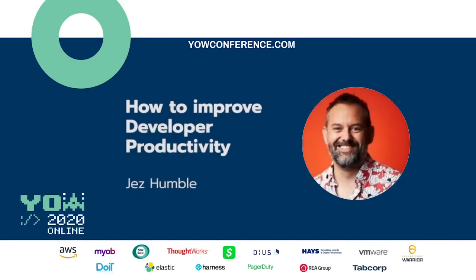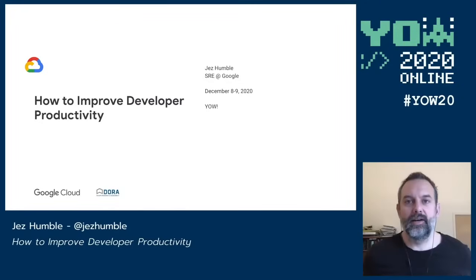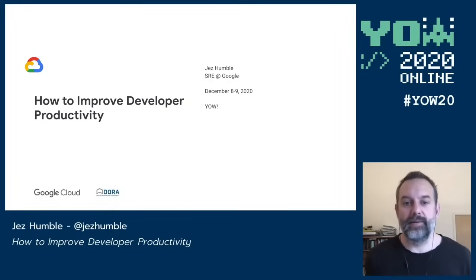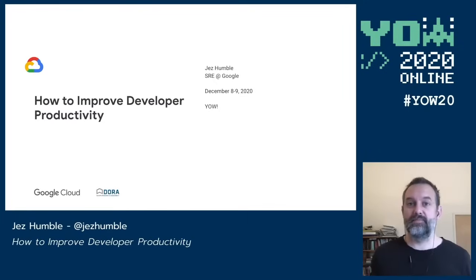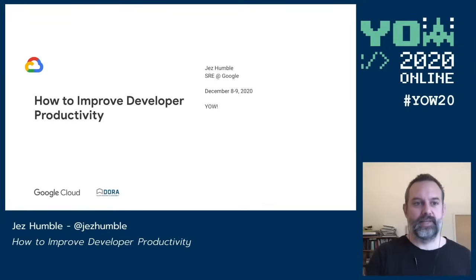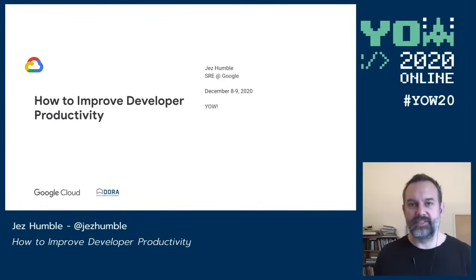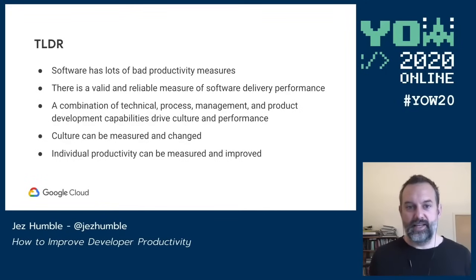Hello, my name is Jez Humble. I'm working in Site Reliability Engineering at Google, and I'm here to talk about developer productivity — what it is, what it isn't, and how to improve it. If you just want the short version and want to go have a cup of tea or a beer, here is the single-page summary.